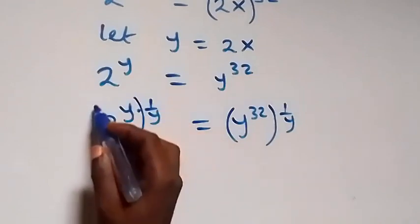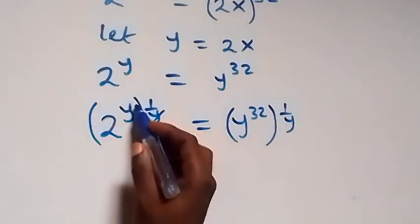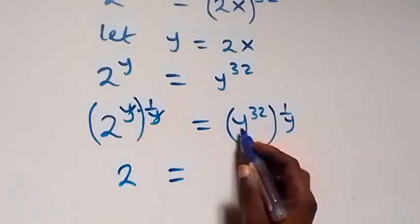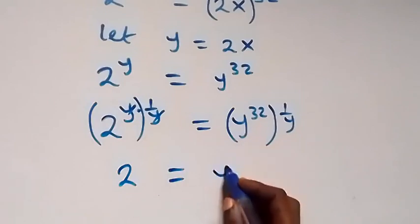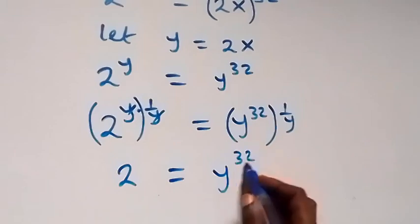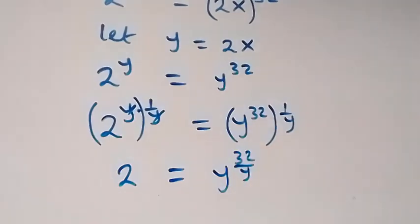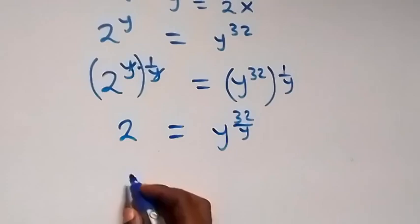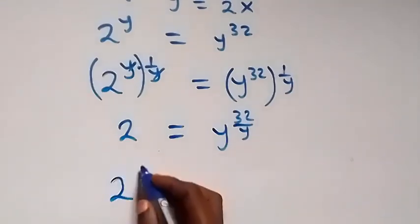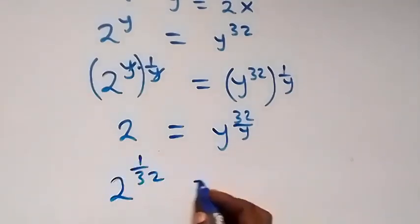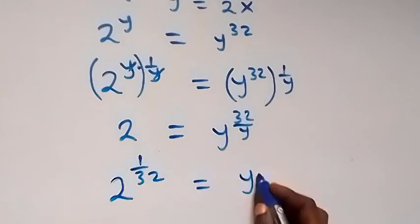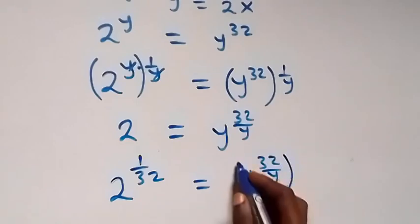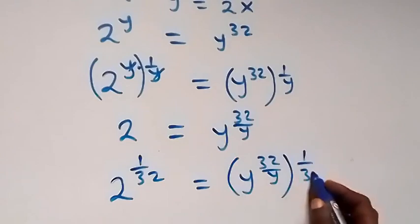This power also multiplies and y cancels out, then we have 2 equals y raised to power 32/y. Next step, let's raise both sides to the power of 1/32, giving us 2 raised to power (1/32) and y raised to power (1/32).